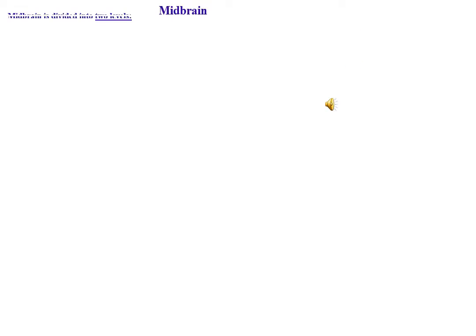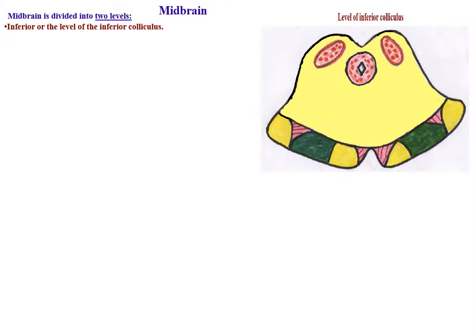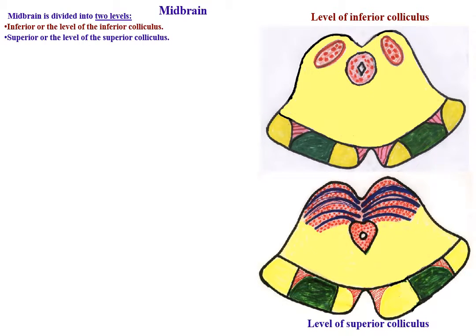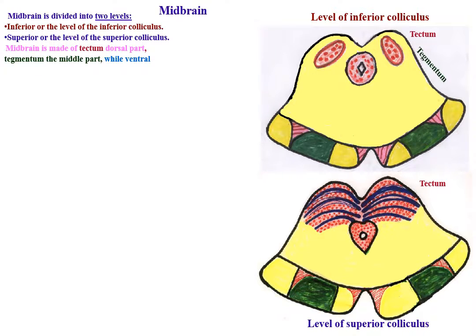The midbrain is divided into two levels: inferior, or the level of the inferior colliculus, and superior, or the level of the superior colliculus. The midbrain is made of three parts: tectum, the dorsal part; tegmentum, the middle part; and the ventral part is the basis pedunculae.